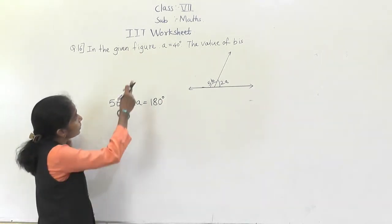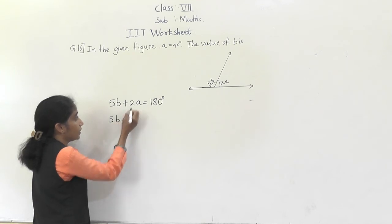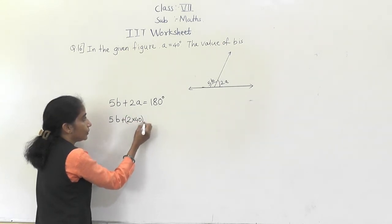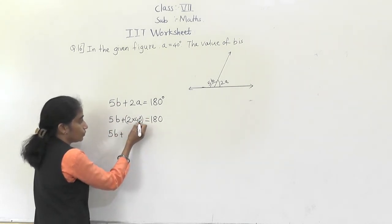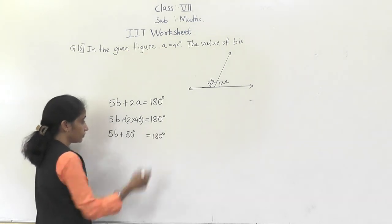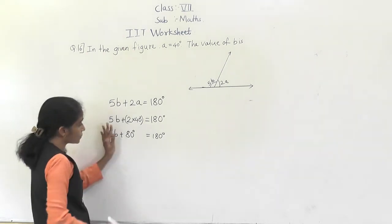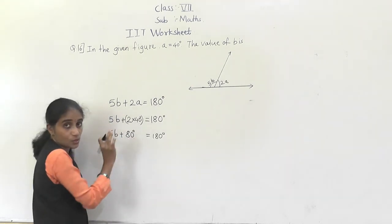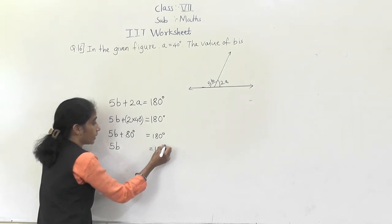The value of A is given as 40 degrees. So 5B plus 2 into 40 degrees equals 180 degrees. That gives 5B plus 80 degrees equals 180 degrees. Now transfer the 80 degrees to the right-hand side — the constant term without a variable goes first. So 5B equals 180 minus 80 degrees, giving 5B equals 100 degrees.